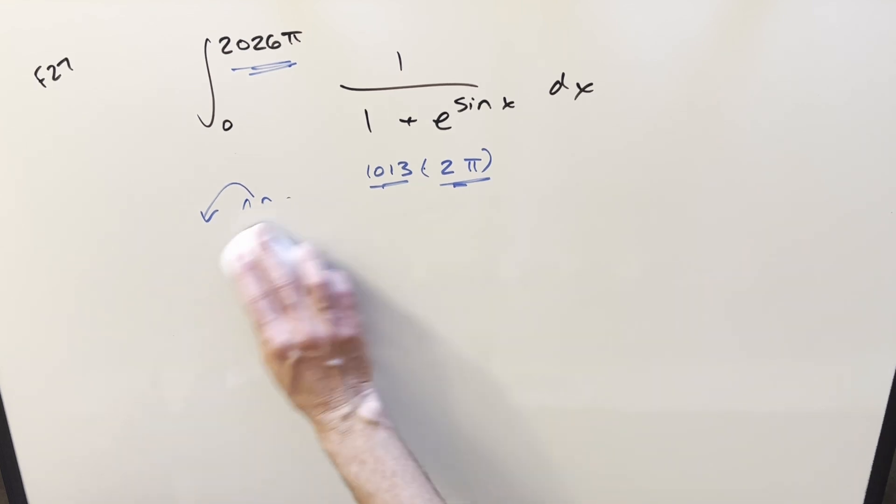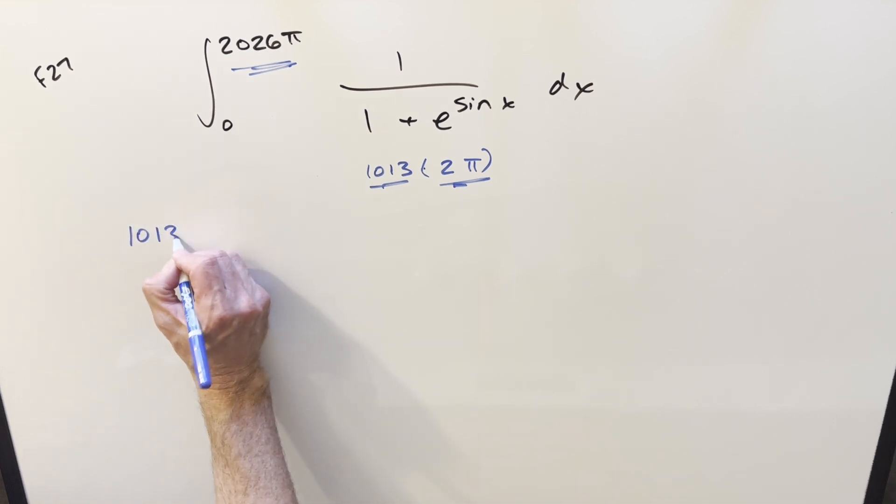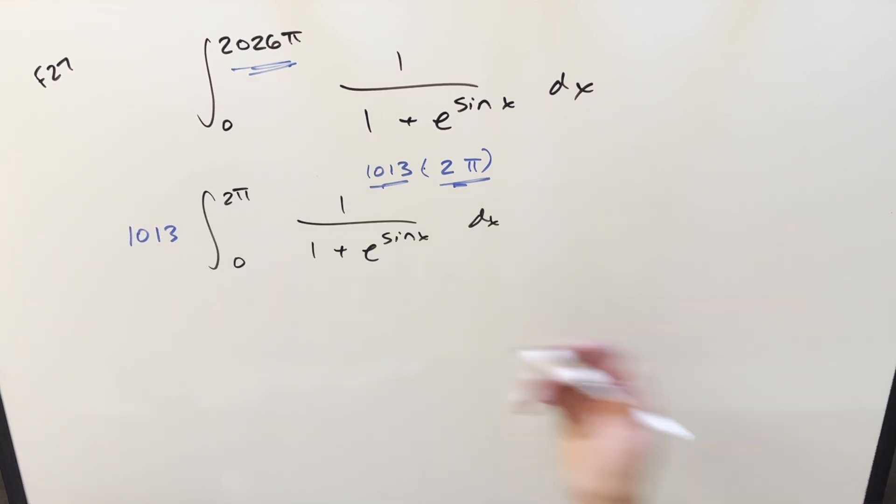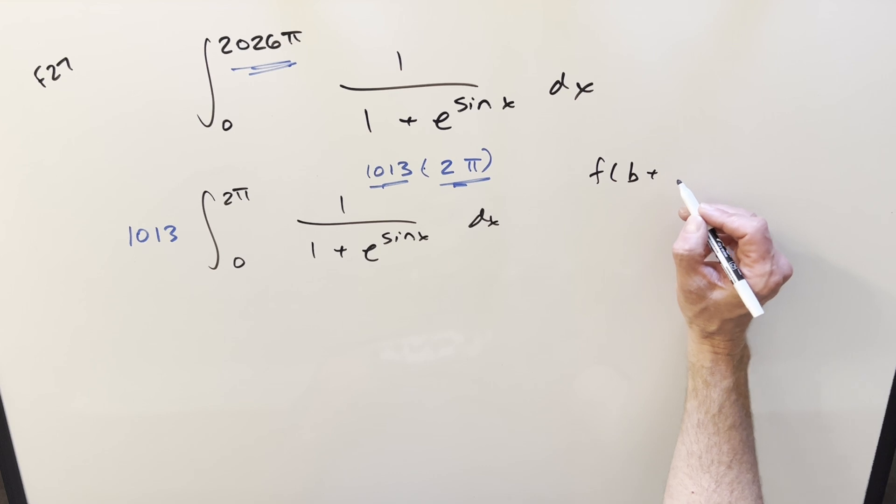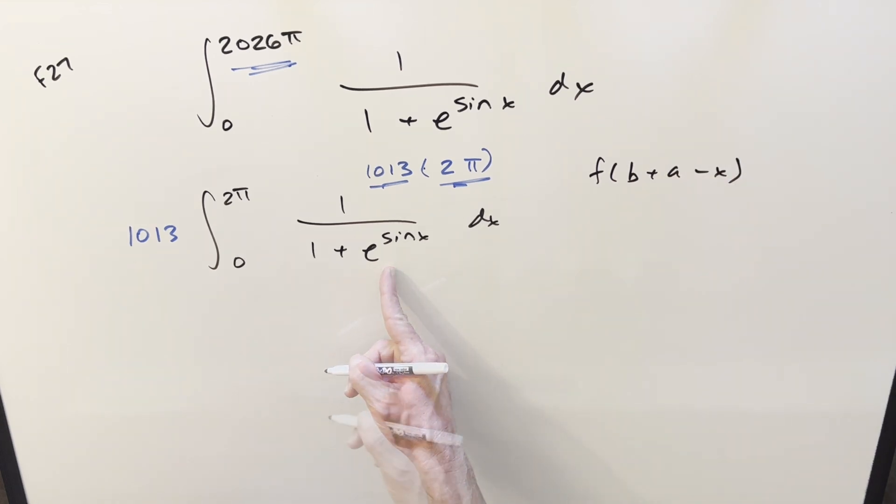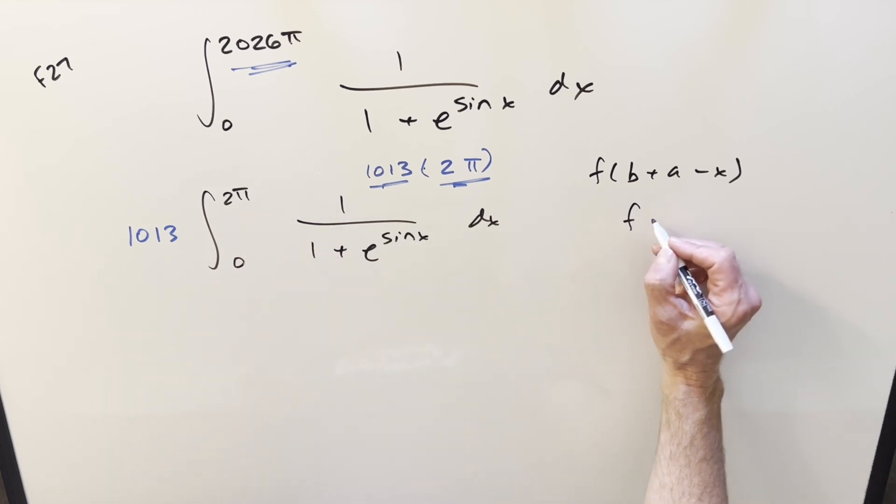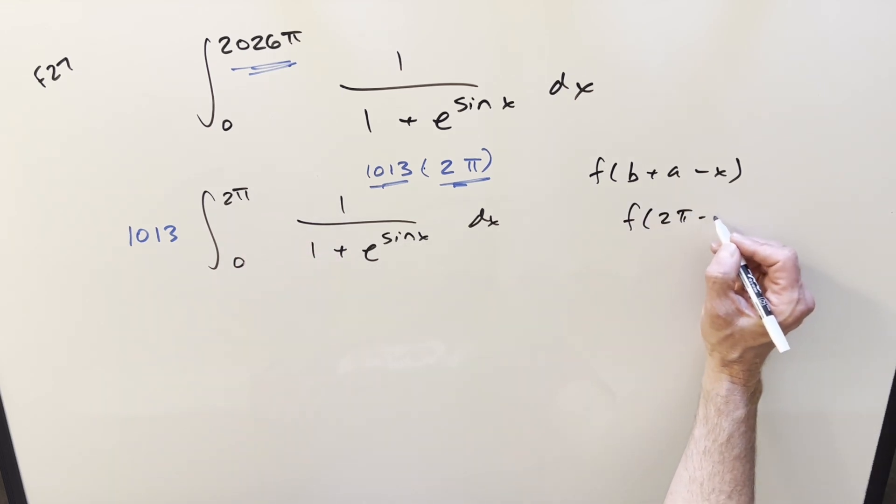When you get used to doing that, you can just do it on sight because you know 2π is going to work. So you can just strip out this 1013 in front. From here what I want to do is use King's Principle where we're going to transform it with f(b + a - x) to transform this integral. But b + a is just adding the bounds - that's just going to be 2π. So what we're going to be looking at is 2π - x.